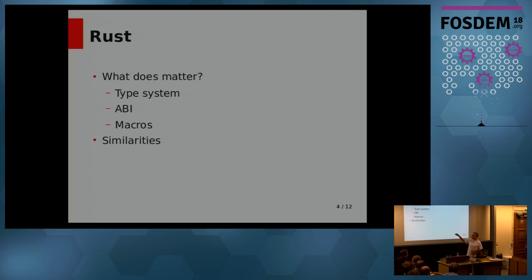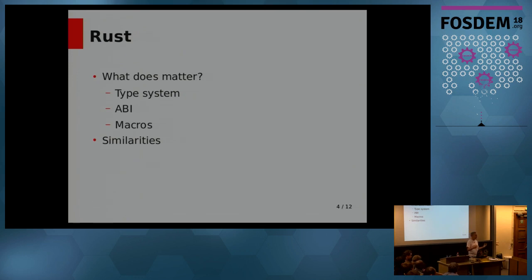I wanted to talk a little bit about similarities. There's a lot of constructs in Rust that come from other programming languages. The Rust world sometimes says that nothing in Rust is revolutionary — it's the combination that's revolutionary. They take ideas from other things and it has a lot of influences. So for many things in Dwarf, that's very easy. Like if you see an integer, Dwarf has good representation of integers. But it turns out there are things that Rust has that Dwarf doesn't really understand.